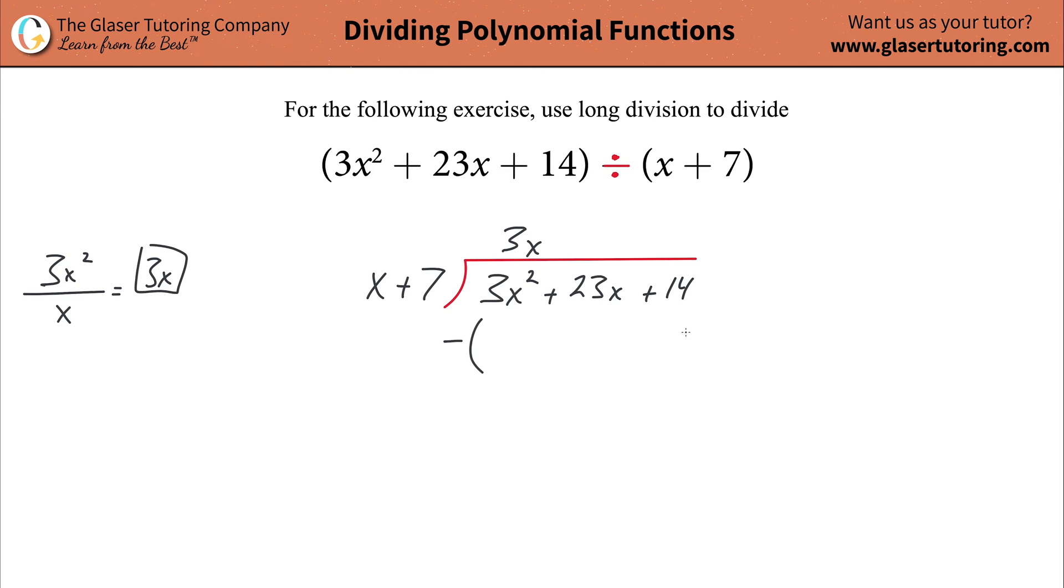After you do that, set up a minus sign and your parentheses. Now you're going to think about multiplication. Take your 3x and multiply it by your x term. That's simply going to be 3x squared. I'm going to put it underneath this term because they have the same base. Next, I'm going to take my 3x and multiply it to the 7, and that's going to work out to be 21x.